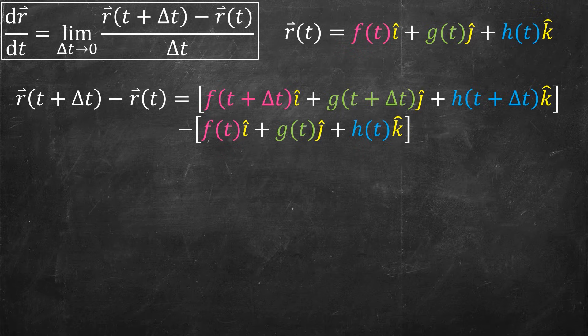And I notice that I'm going to subtract, what is r of t plus delta t? It's the sum of all those three things, but with t plus delta t put in. Then I subtract off those three things, and this is what I get.